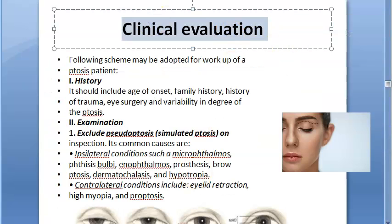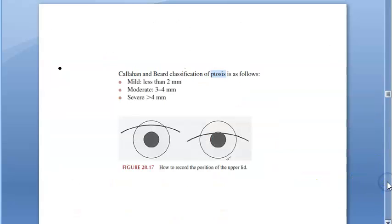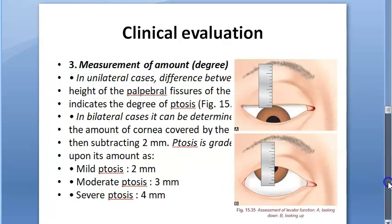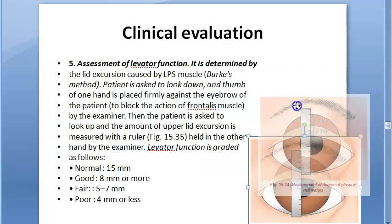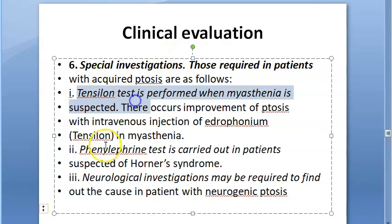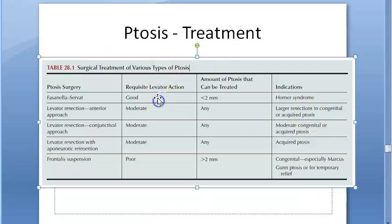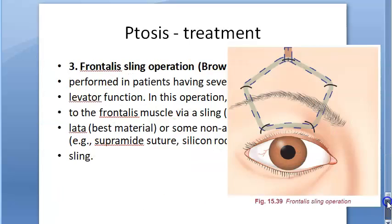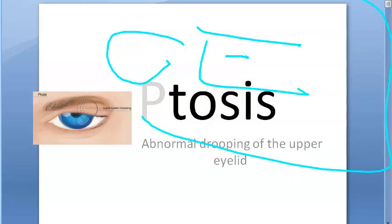For clinical evaluation of ptosis, you take a history, examine both sides comparatively, and classify as mild, moderate, or severe. The levator function must be assessed. Special investigations include the Tensilon test, phenylephrine test, and photographic records for comparison. Treatment options will be covered in the next video on clinical evaluation of ptosis.